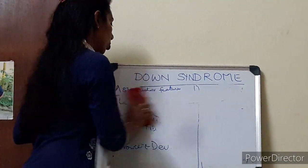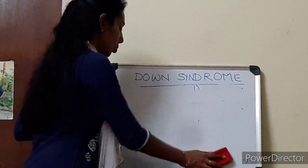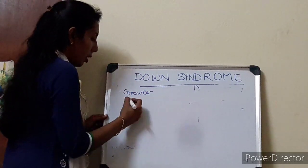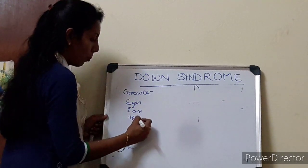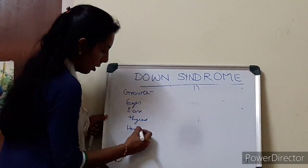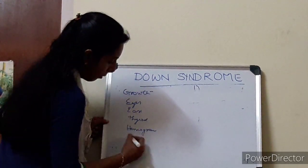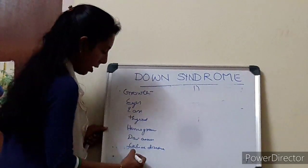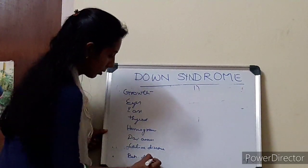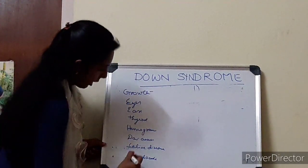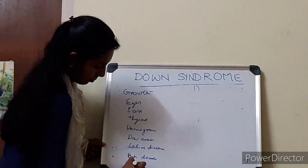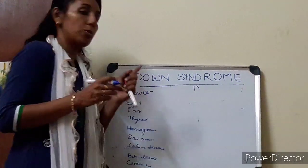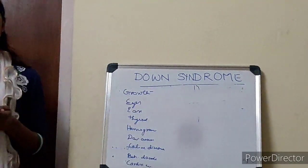When we understand the associated features properly, we can know how to put a child with Down syndrome under follow-up. First and foremost, please monitor the growth of the child — eyes, ears, thyroid profile, hemograms, developmental assessment, screening for celiac disease, and behavioral disorders — and also cardiac evaluation. When you plot the growth of the child, they have specific growth charts for Down syndrome babies available.